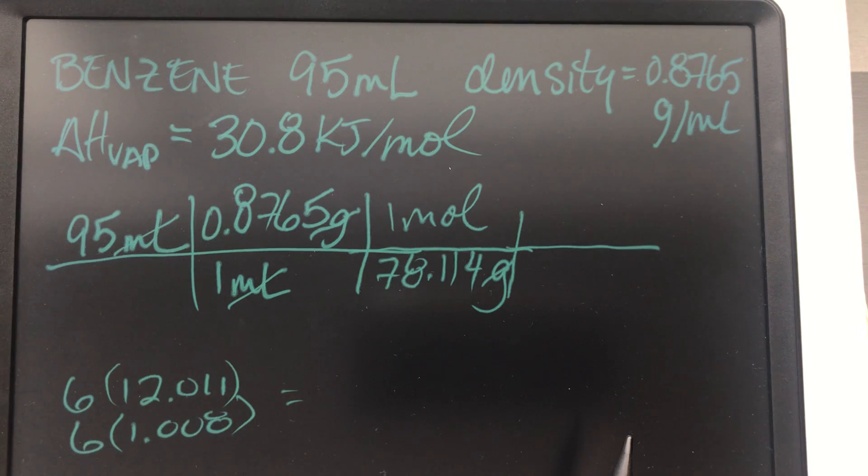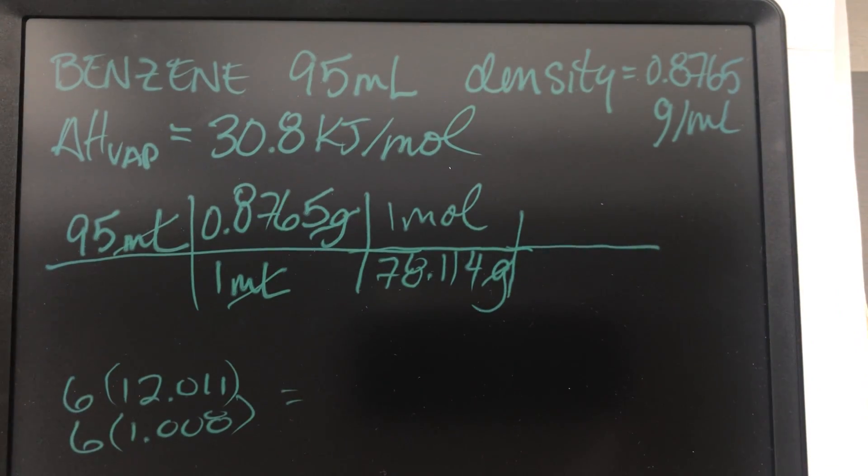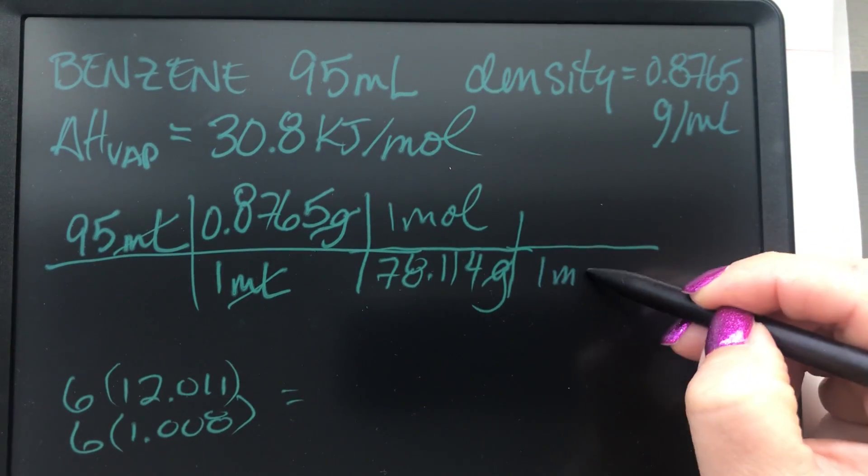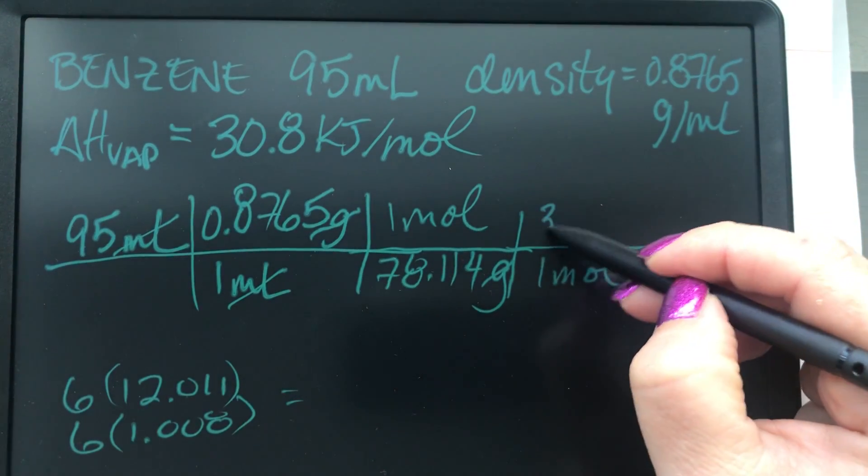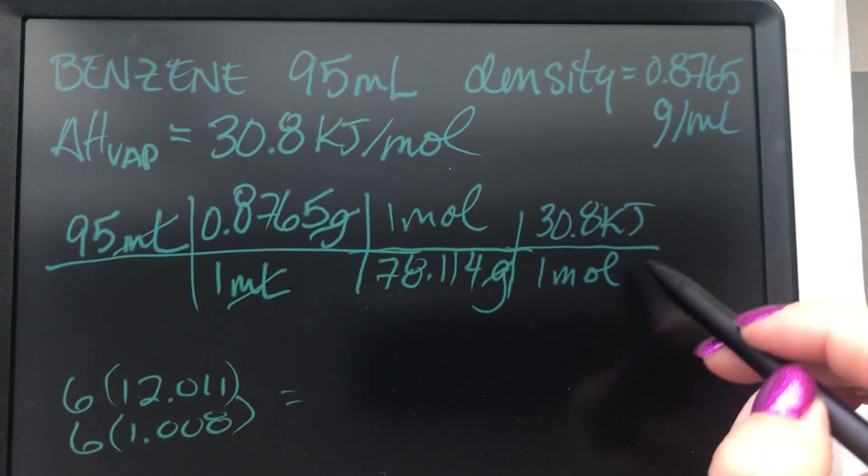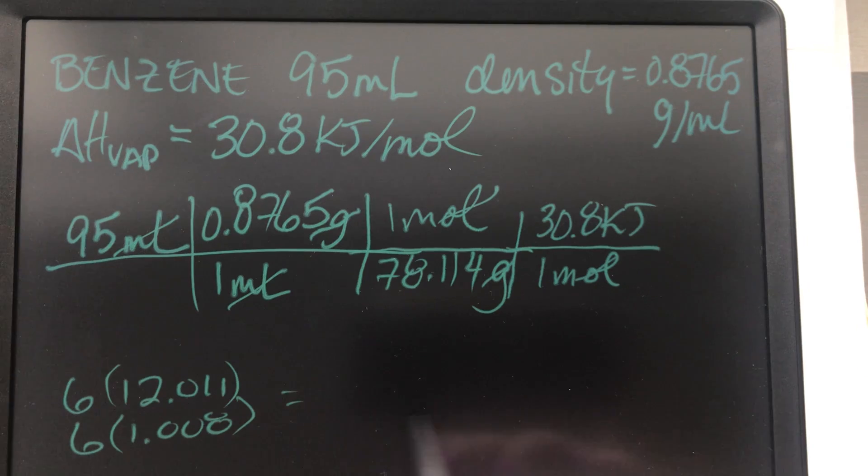Convert to the enthalpy of vaporization. Use the enthalpy of vaporization to get kilojoules by itself, right? Because that's what we're looking for. We're asked for an energy so we know that the energy should always be in some flavor of joules, right? So we want moles on bottom. And we know that there's 30.8 kilojoules for every one mole. So what do we end up getting?